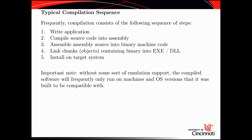Without emulation support, compiled software will frequently only run on machines and OS versions it was built to be compatible with. This applies to .exe and .dll files, and also Java applications — where the 'machine' is whatever JVM version you're using. It's common to find programs written for a newer version of Java that won't run in an older version and vice versa. The same is true for Windows: a program written for Windows 10 may be missing something if trying to run on Windows XP unless you ship the missing piece.